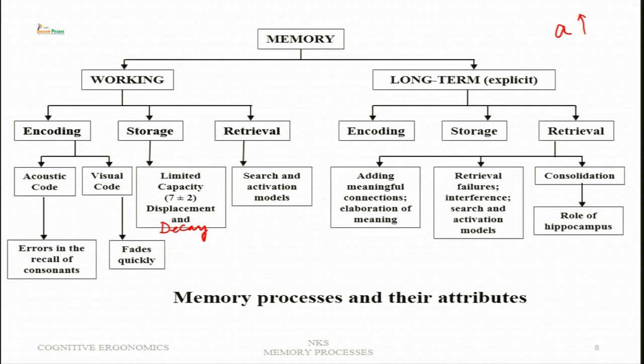Retrieval from working memory involves a conscious serial search. Sternberg's paradigm showed that as the number of items in the memory set increases, reaction time increases linearly — indicating a serial search process. More items in the memory set means more time is required to locate the target item or to confirm it is absent, requiring the entire series to be searched.